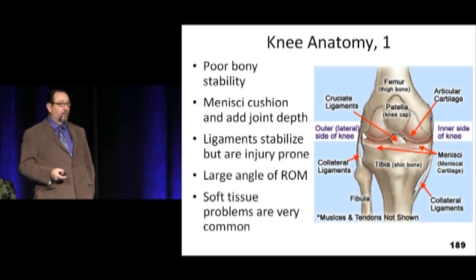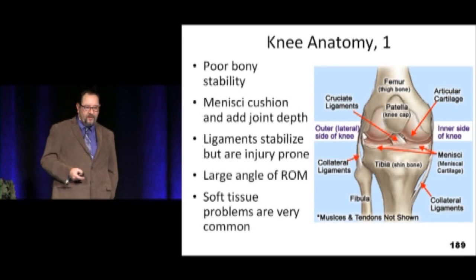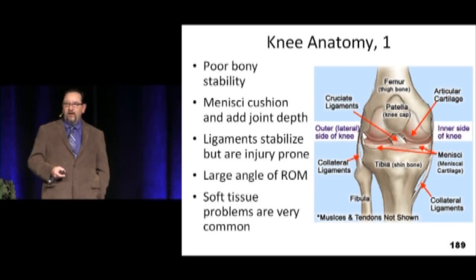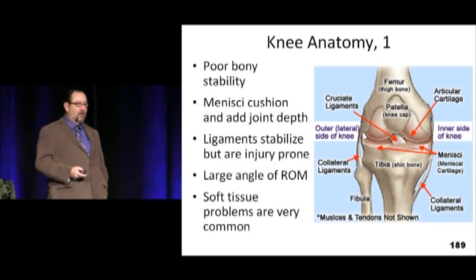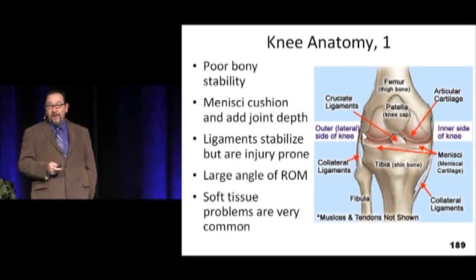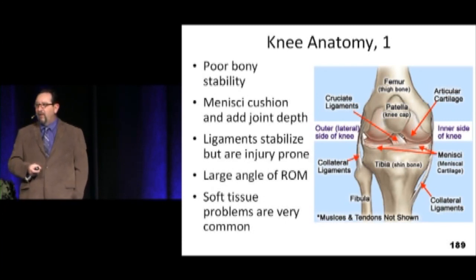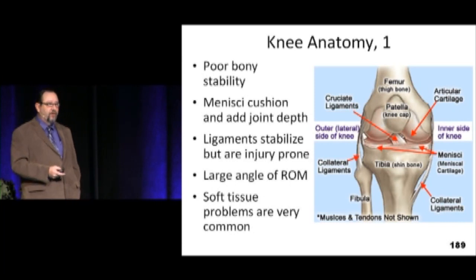Poor bony stability. The menisci are really important to provide cushion and depth to the joint — they're critical for how the femoral condyles articulate with the tibial plateau. The anterior cruciate and posterior cruciate ligaments provide stability along that axis, and the lateral collateral ligaments are also quite important. Large range of motion is also an issue, so there's a big and generous joint capsule. You'll see big effusions — if there's an inflammatory process or a hemarthrosis, the knee will get huge.